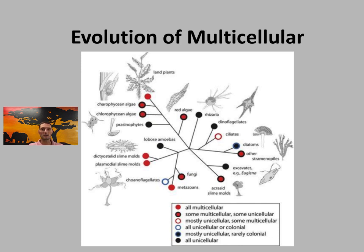Cells of multicellular organisms have lost the ability to survive independently, but this is also a benefit: if one cell dies, the organism doesn't perish — it can typically replace that lost cell. The evolution of multicellular organisms has happened differently in plants versus animals, but both exist because of the benefits they have compared to prokaryotes.